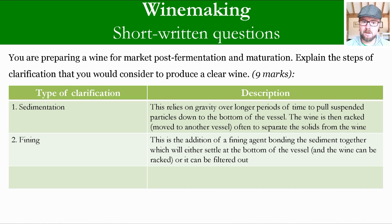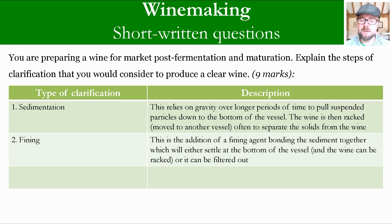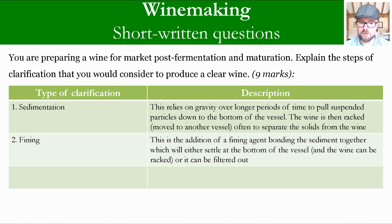The next type of clarification is fining — the addition of a fining agent. At Level 3, it doesn't go into specific fining agents in great detail, but there are many available, including albumen, which is the coagulant found in egg white. The description you need is: the addition of a fining agent bonding the sediment together, which will either settle at the bottom of the vessel so the wine can be racked, or it could be filtered out.